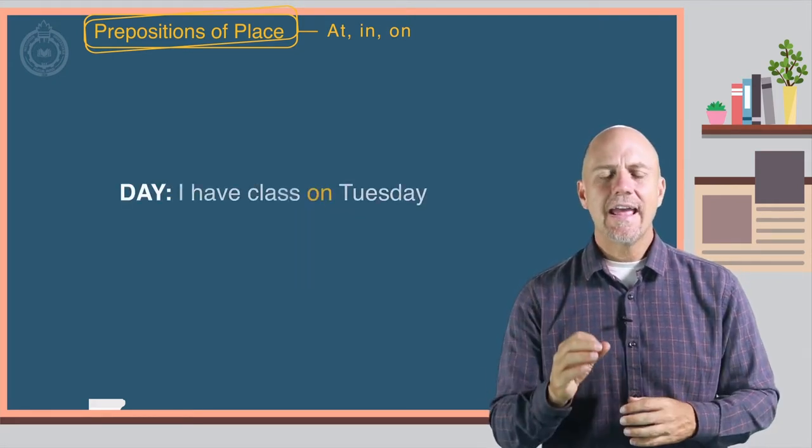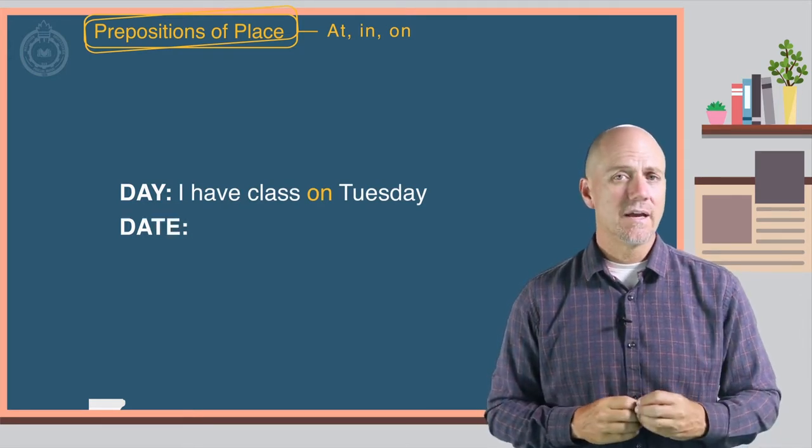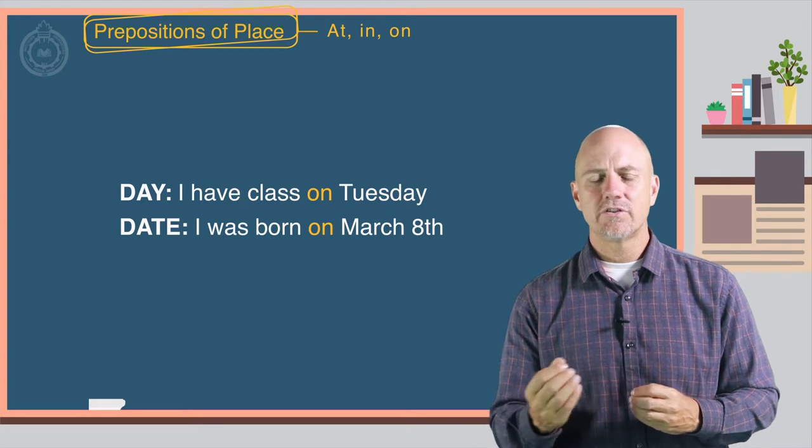Here are some examples. A day: I have class on Tuesday. Or a date: I was born on March 8th.